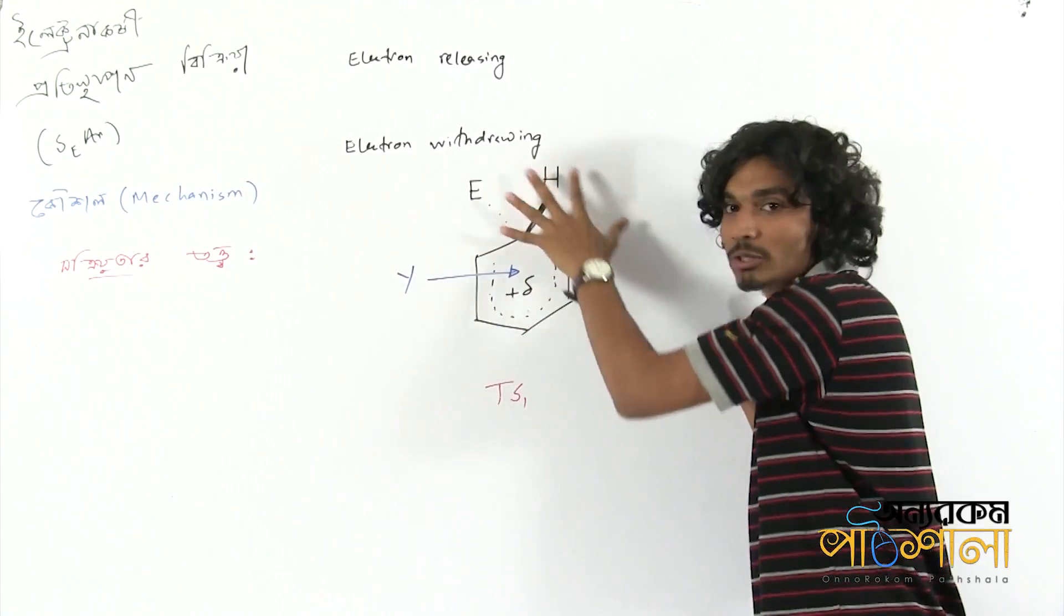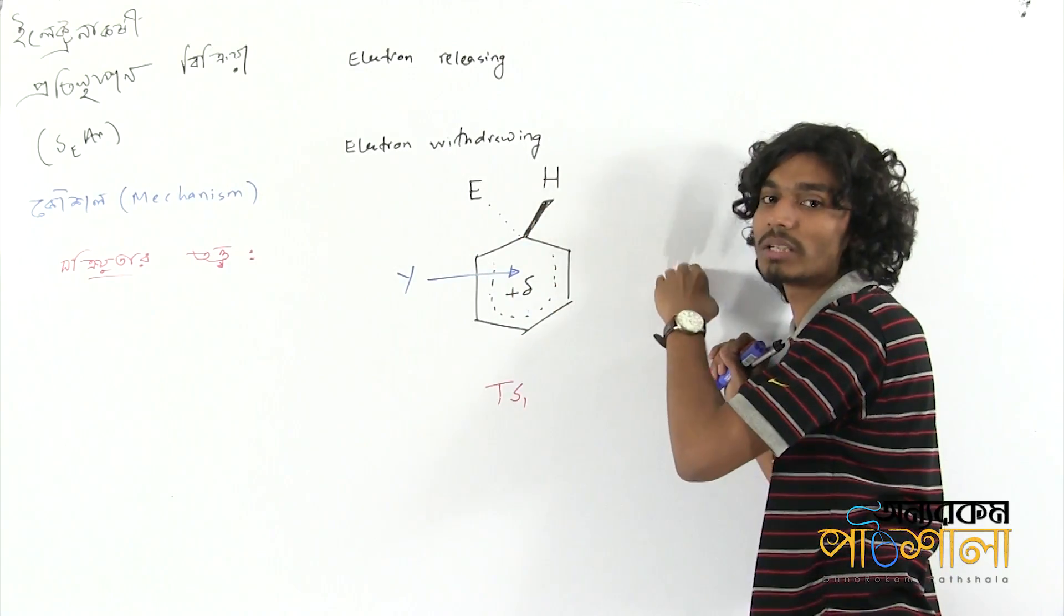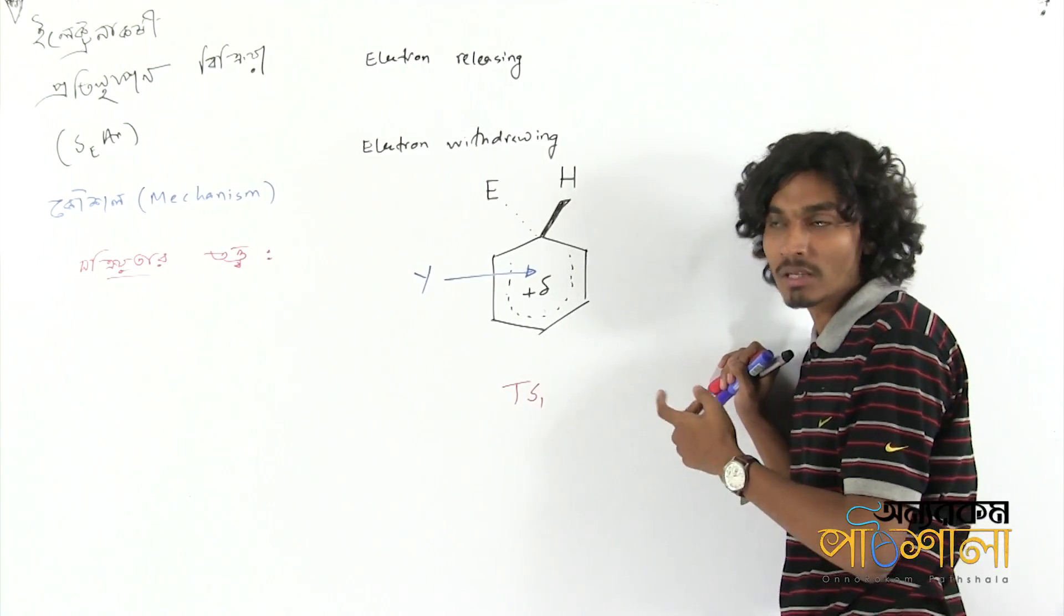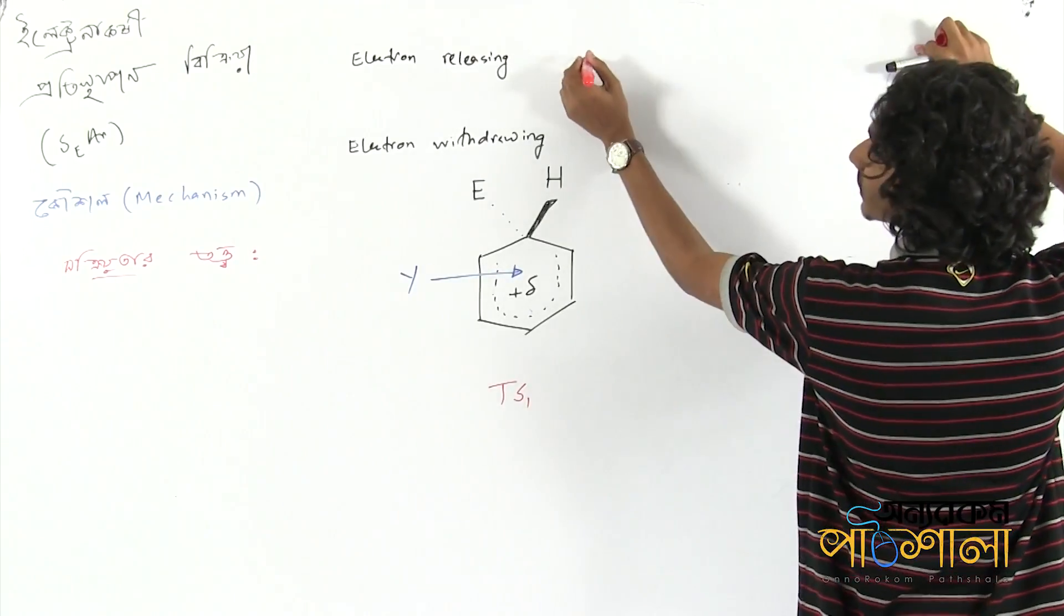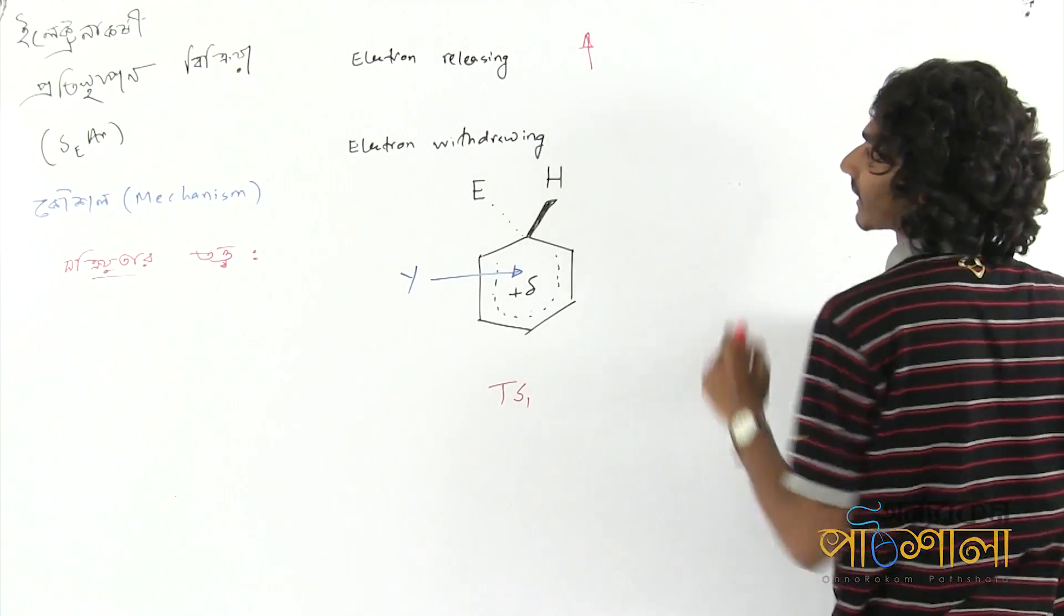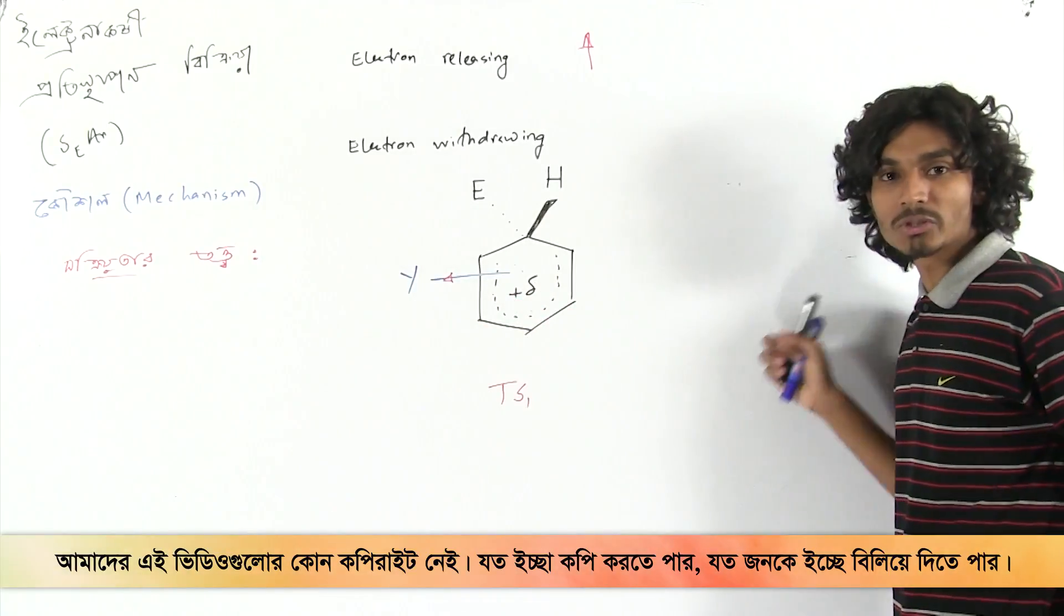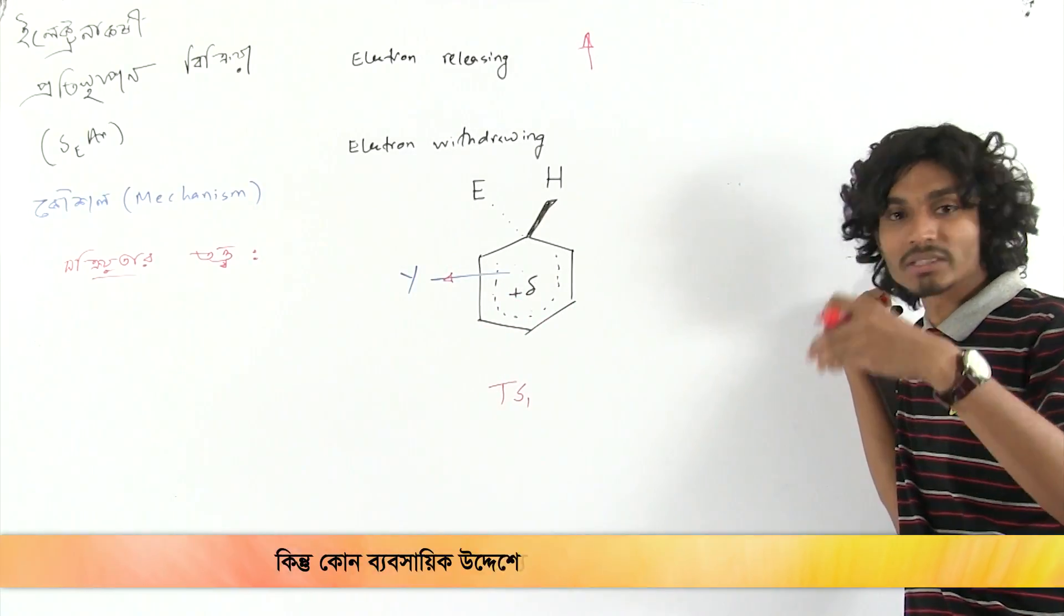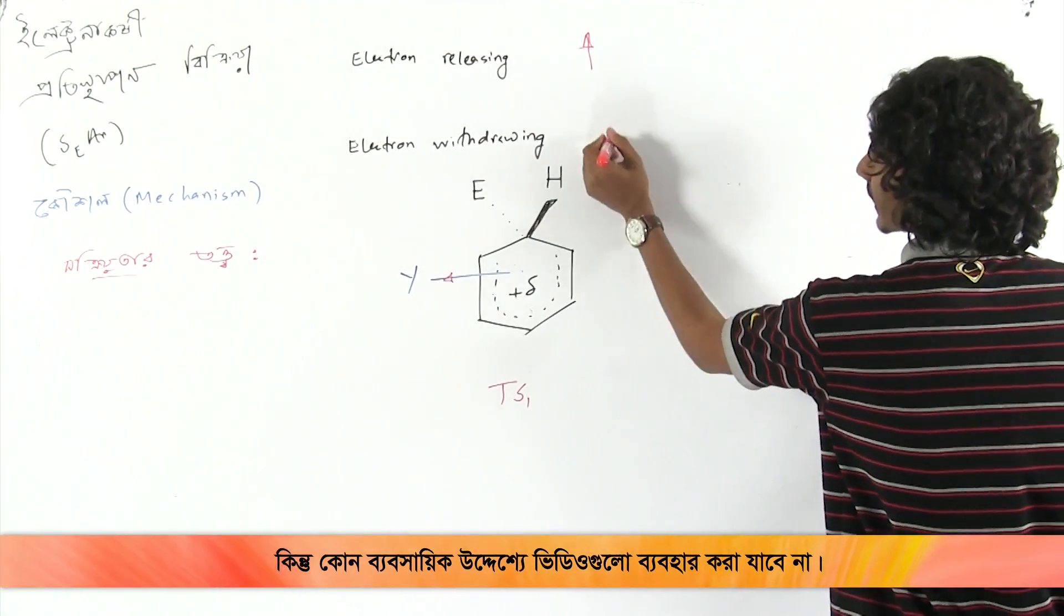Certainly, with the electron releasing group, the releasing group would increase reactivity. But with the electron withdrawing group, the electron withdrawing group would decrease reactivity. Nucleus takes a body together. Plus charge increases, so transition state is unstable. So transition state energy is higher. That means activation energy is higher.